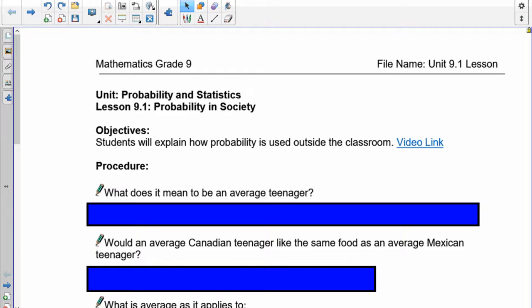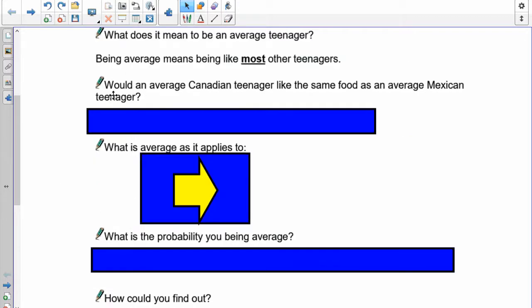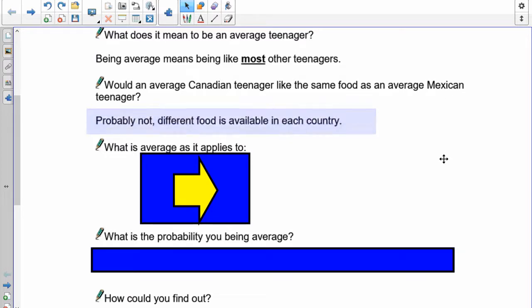So I ask the question, what does it mean to be an average teenager? Well, in order to be average, you have to be like everybody else. And that causes the difficulty because everything else is always the group averaged out. So the chance that you fall exactly in the middle where the average is, is actually going to be probably pretty low. But being average means like being most other teenagers. Would an average Canadian teenager like the same food as an average Mexican teenager? I'm assuming they're living in their own country, so I would assume that you would say no to this.